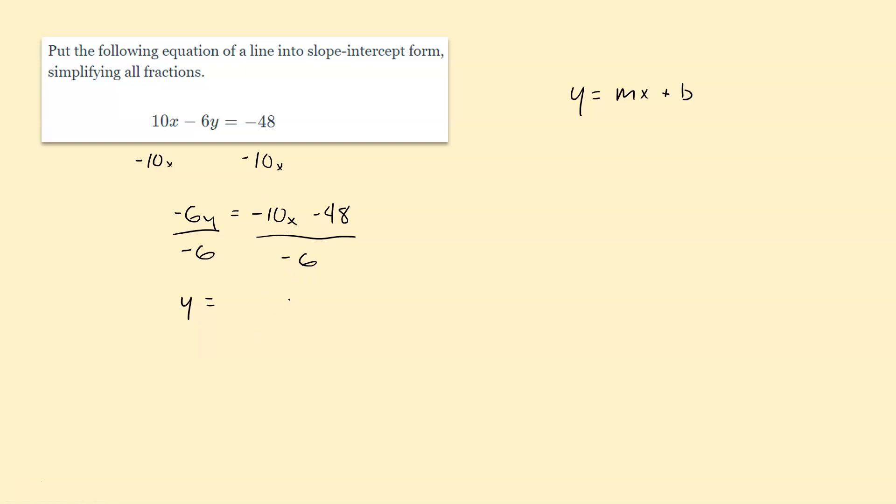So you can also write this as two separate fractions. And it does say simplifying all fractions. So we might be better off writing it like this here. So now we can think about simplifying these fractions individually. So negative 10 over negative 6 first off becomes positive. And then we can simplify the numerator and the denominator by a factor of two here. So we could say 5 halves x.